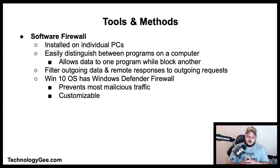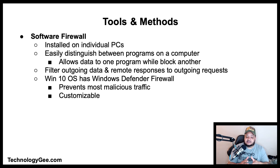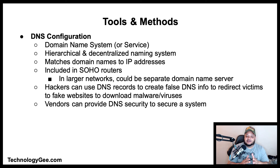A software firewall is installed on individual computers on a network. Unlike hardware firewalls, software firewalls can easily distinguish between programs on a computer, allowing data to one program while blocking another. Software firewalls can also filter outgoing data as well as remote responses to outgoing requests. Windows 10 has incorporated Windows Defender Firewall into the operating system, which prevents most common types of malicious traffic, and the user can customize its settings as needed.